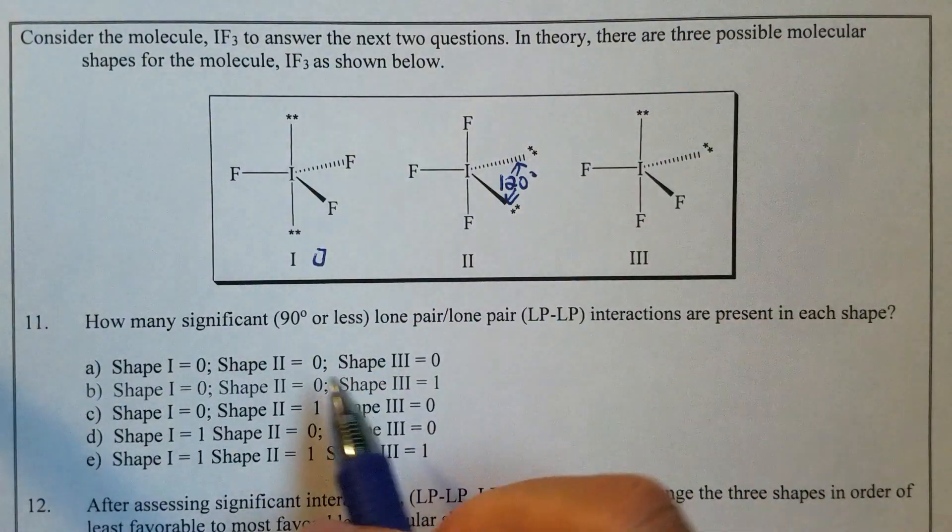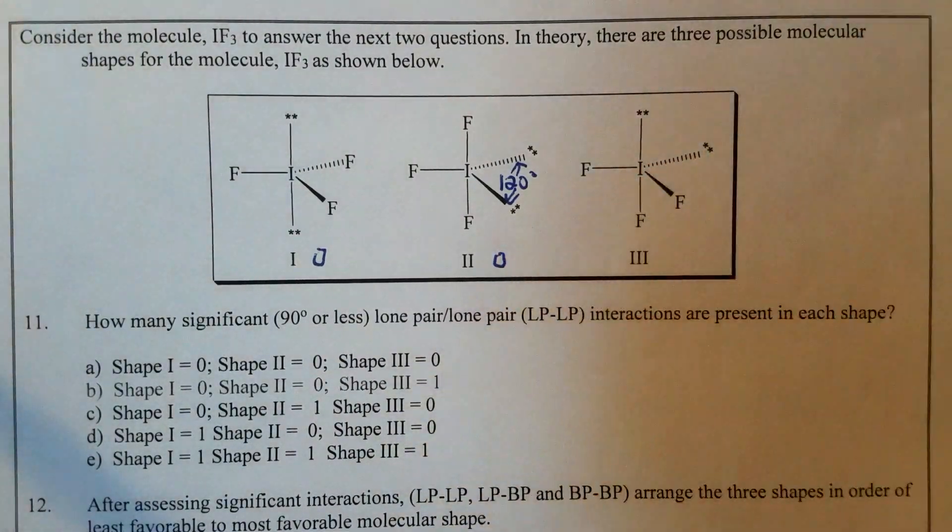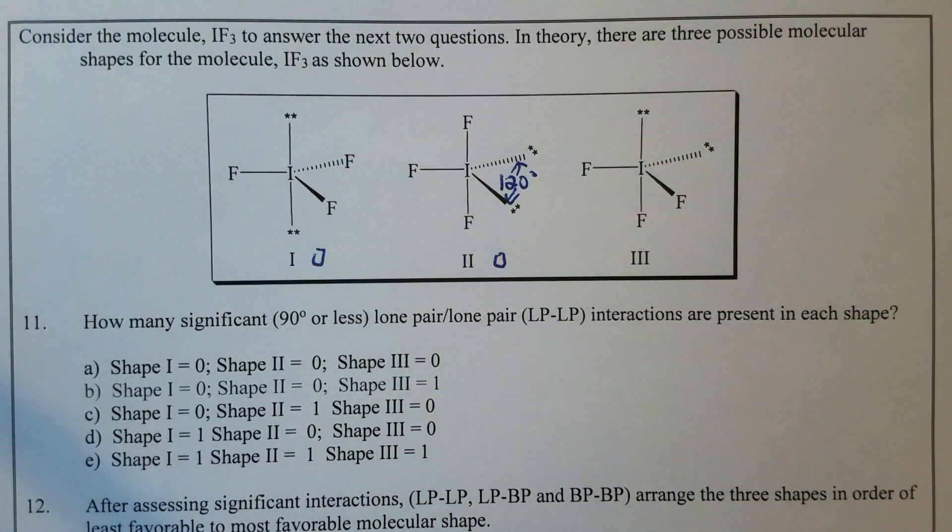And that's also greater than 90 degrees. Therefore, for shape number two is also zero.